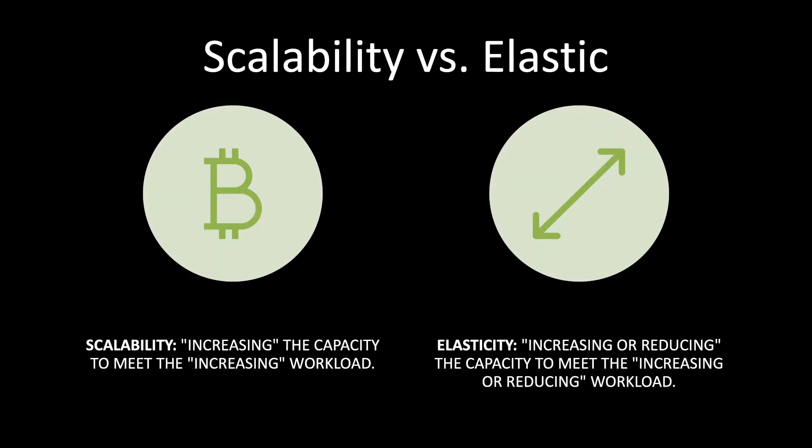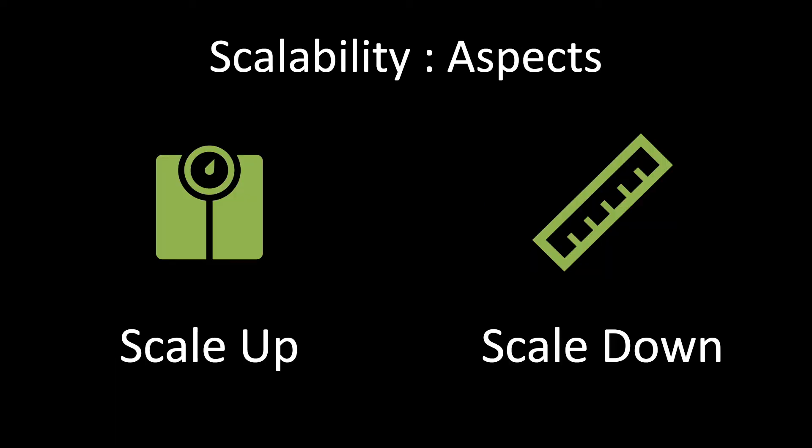Another question that comes up is: what is the difference between scalability and elasticity? These terms look very similar, but elasticity is a more popular term these days, especially in cloud offerings from AWS and Google Cloud. Scalability means being able to increase capacity to meet increasing workload. Elasticity means we can increase or reduce capacity to meet increasing or reducing workload. Both are similar concepts with minor differences, but scalability is still the most commonly used word.